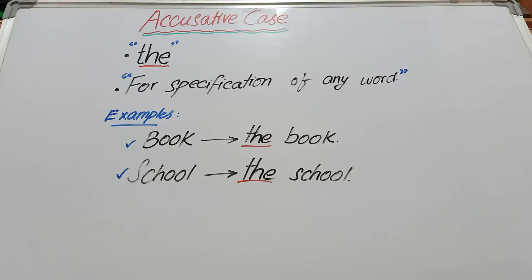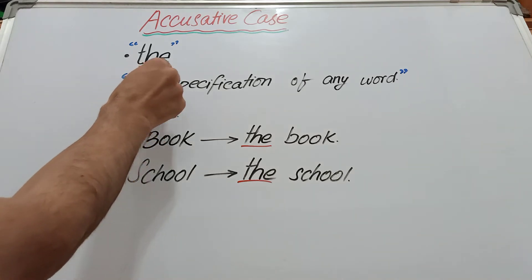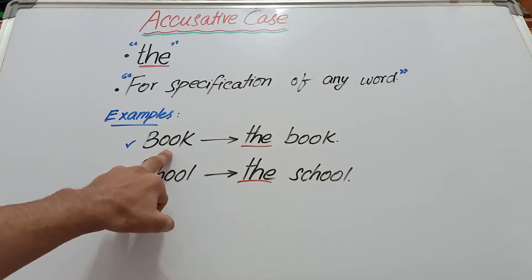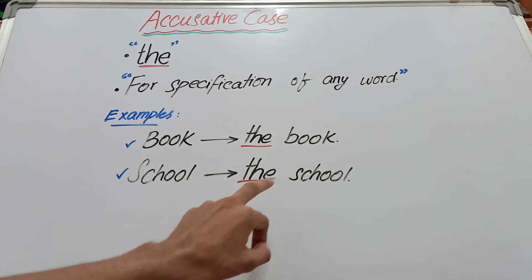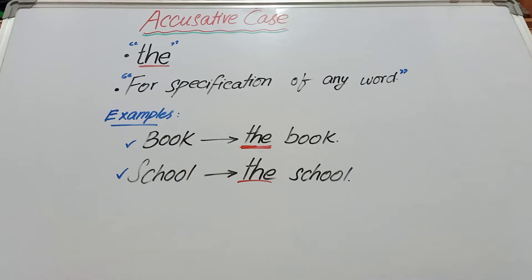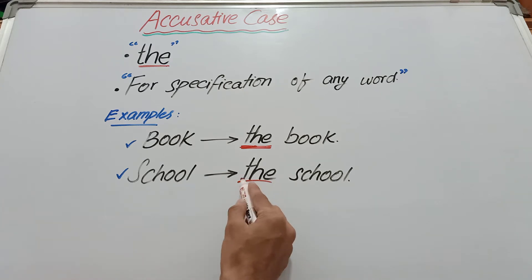Let me revise again: the accusative case is equivalent to the definite article 'the' in English. If you want to specify any word in your sentence, you will use the accusative case. For example, to specify 'book' we write 'the book' — the 'the' here is the accusative case. Similarly, 'school' becomes 'the school', and that 'the' is the accusative case.